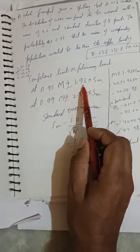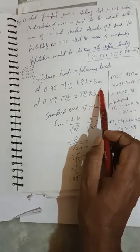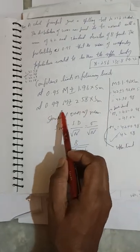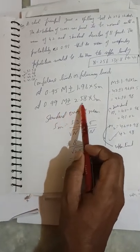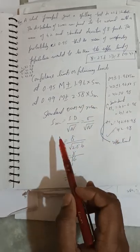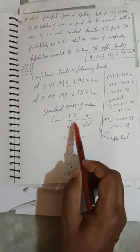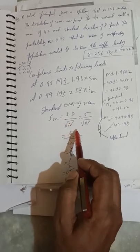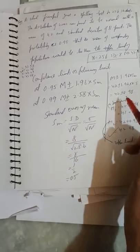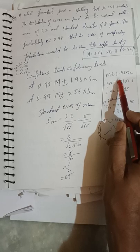At 99% it is m ± 2.58 × standard error of mean. Standard error of mean = standard deviation / √n, where n is sample size. We need to apply m ± 1.96 × 0.5.